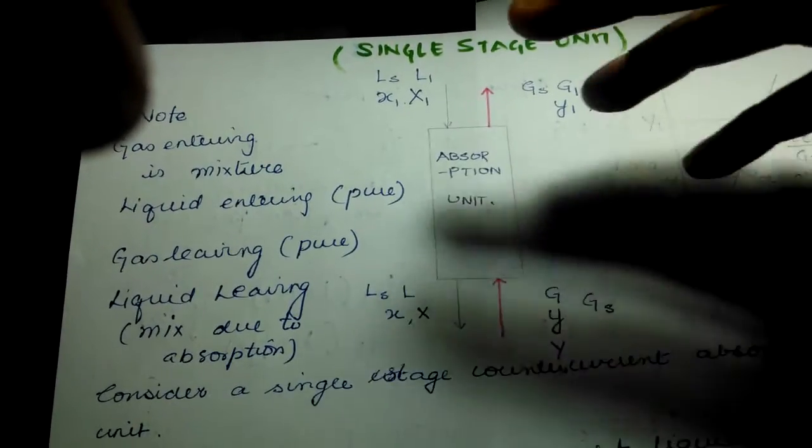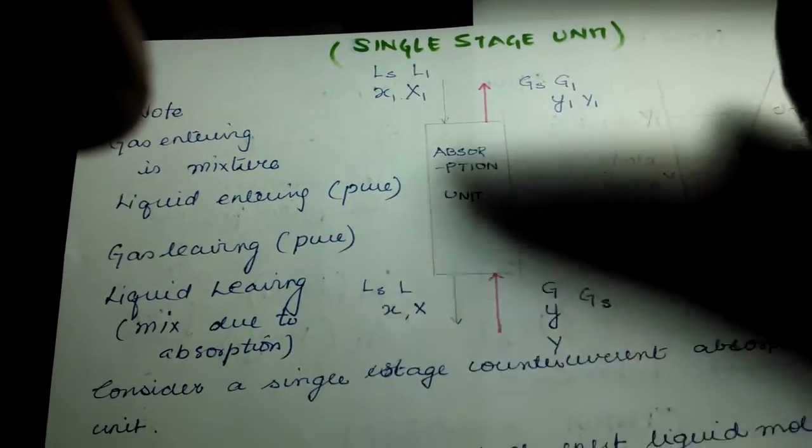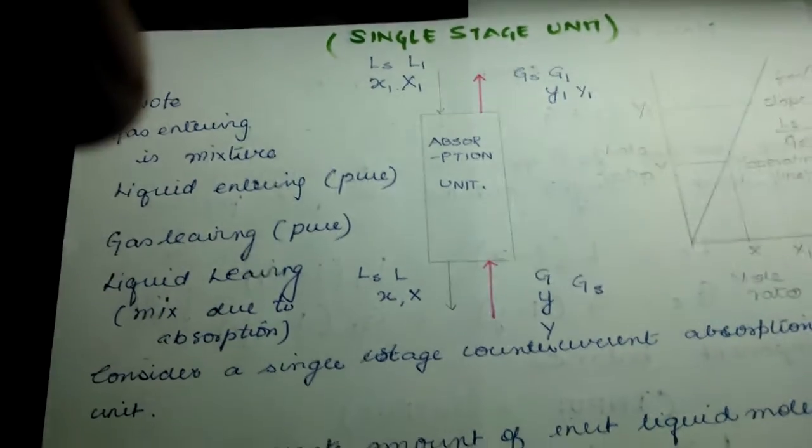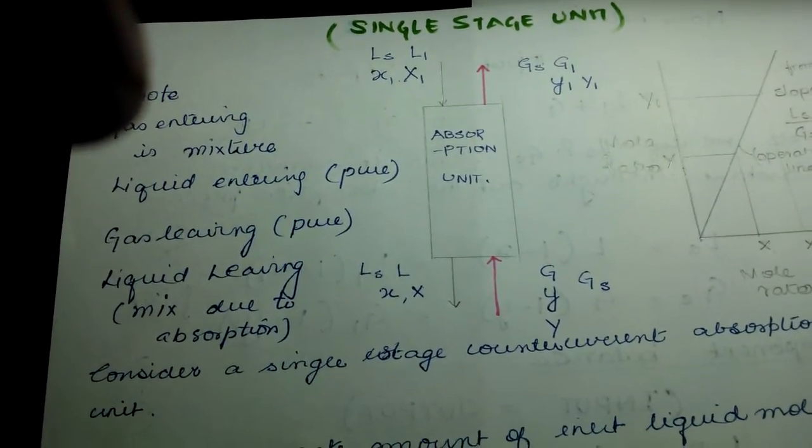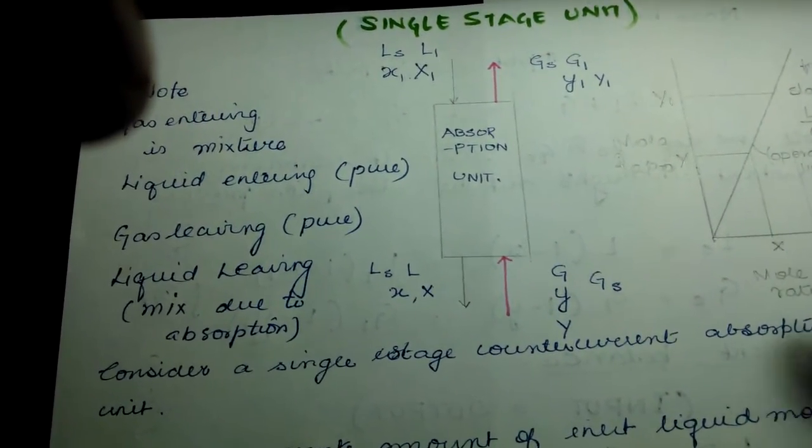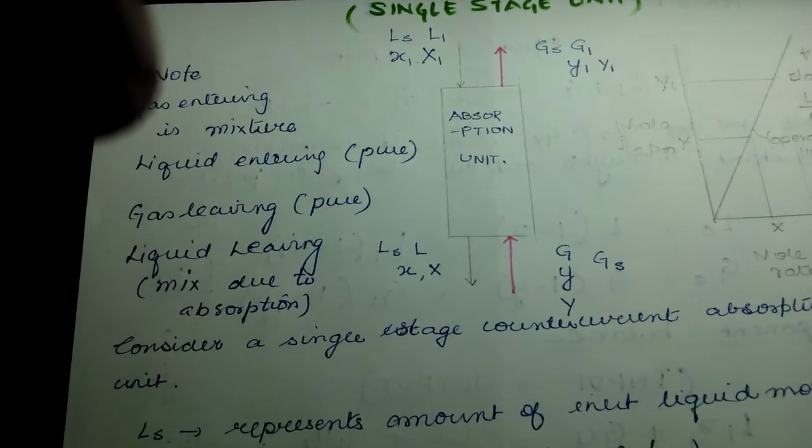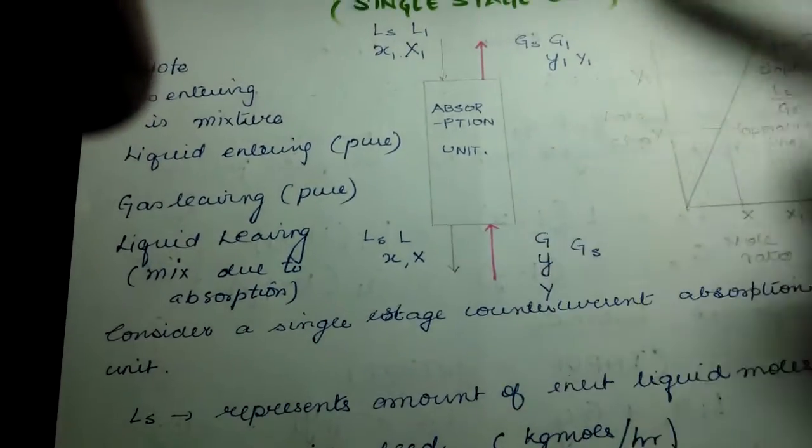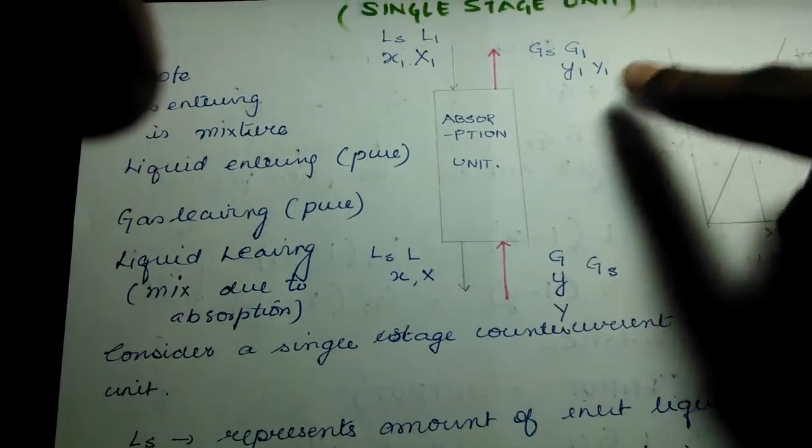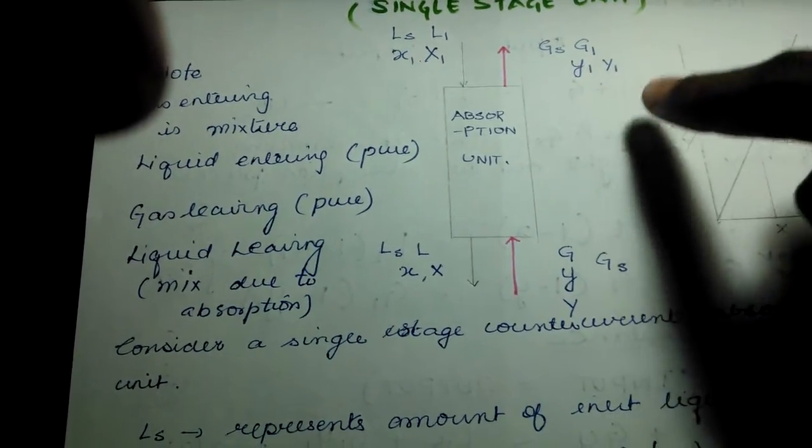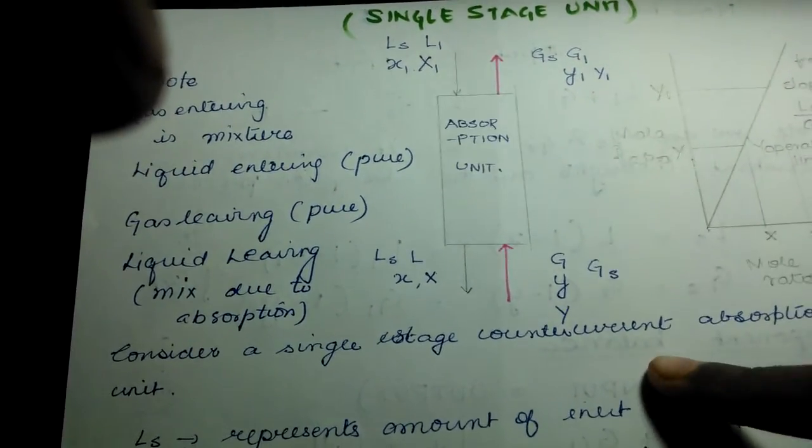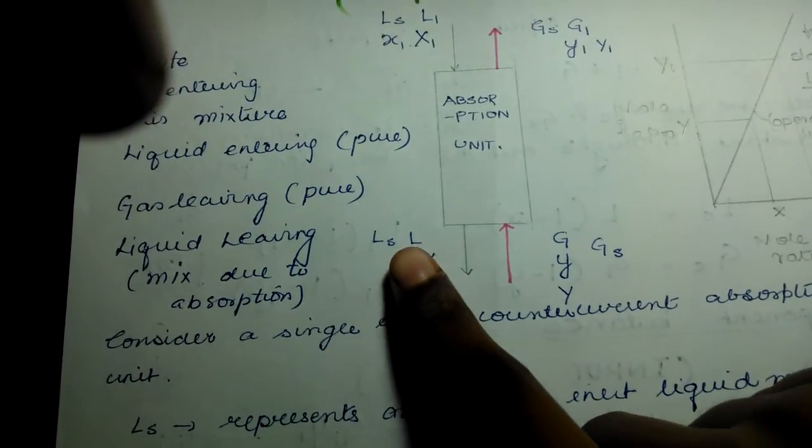The amount of LS and GS which will not react remain constant, whereas the reacting portion will continue to do its operations. At the exit we have G1, y1, and capital Y1, and LS.